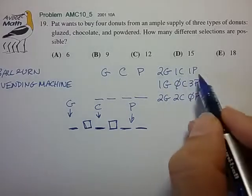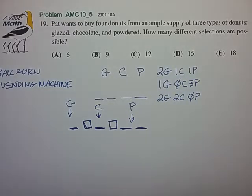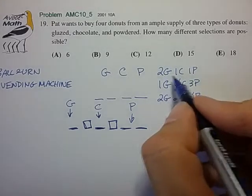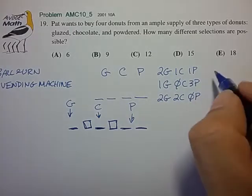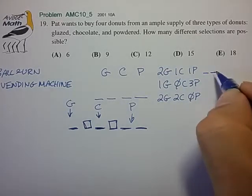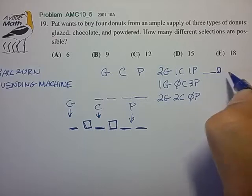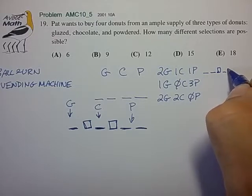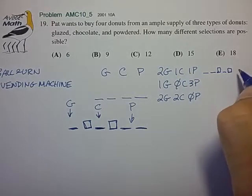So going back to our first set here, we can use some examples. Two glazed, one chocolate, and one powdered would look like two slots, a separator, a slot, a separator, and a slot.